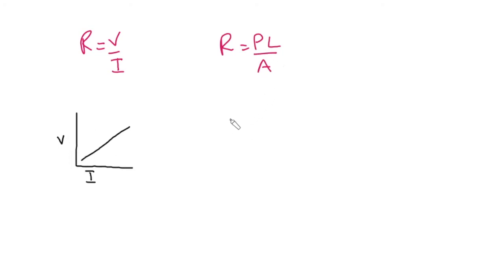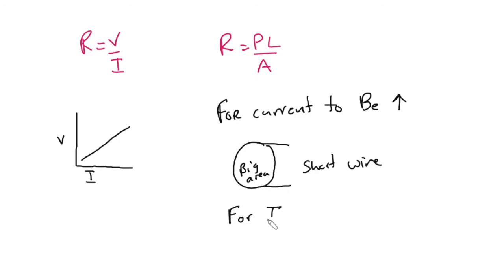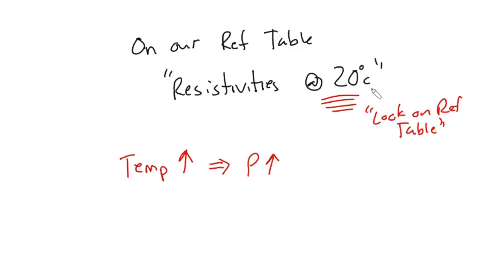But if we look here, we look for current to be up, we want really big area and a short wire. For I to be down, we want a little tiny A and a really, really long wire. So that should get you started with resistance and resistivity. Don't forget, guys, that when you see this 20 degrees Celsius, to look on the reference table. I'll see you on the next lesson.